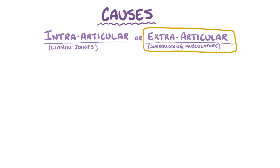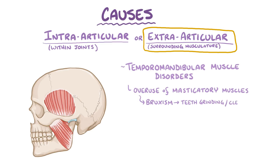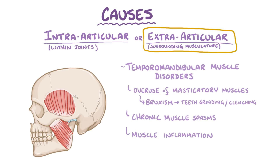Extraarticular causes are also called temporomandibular muscle disorders, and they include things like overuse of the masticatory muscles, like in bruxism, which is teeth grinding or jaw clenching, as well as chronic muscle spasms or muscle inflammation.